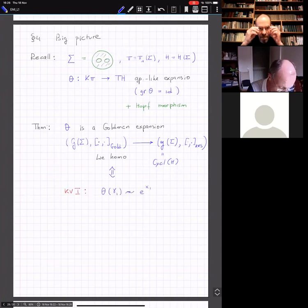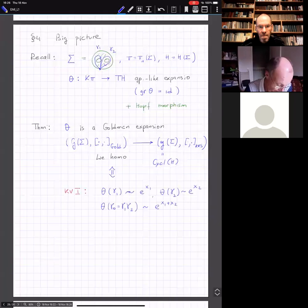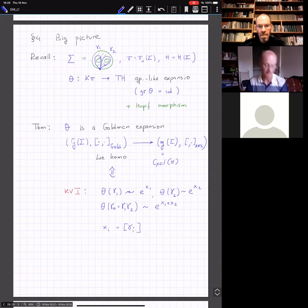This statement is isomorphic to the so-called KV1. KV1 says that theta of gamma one is conjugate to exponential of x one, theta of gamma two is conjugate to exponential of x two, and theta of gamma one gamma two is conjugate to exponential of x one plus x two. Where gamma one and gamma two are generators of pi and xi is a homology class of gamma i.